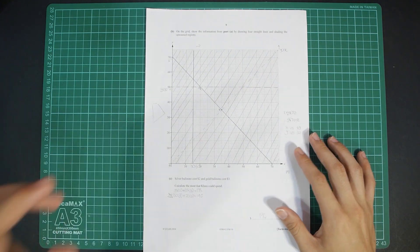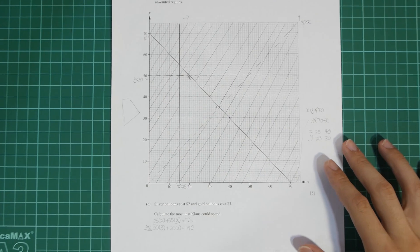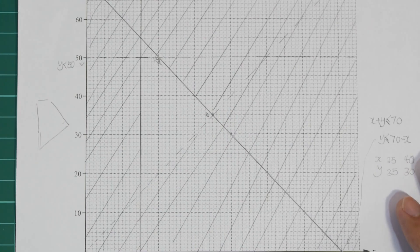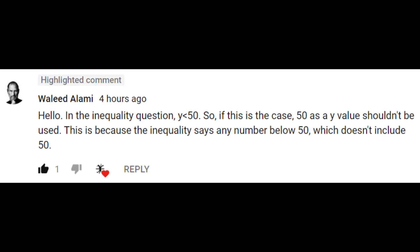Thank you for watching. This is a quick video for question 6 part B. One of our viewers, Waleed, pointed out that I made a mistake in the video. The reason I got it wrong is because I overlooked the inequality symbols.